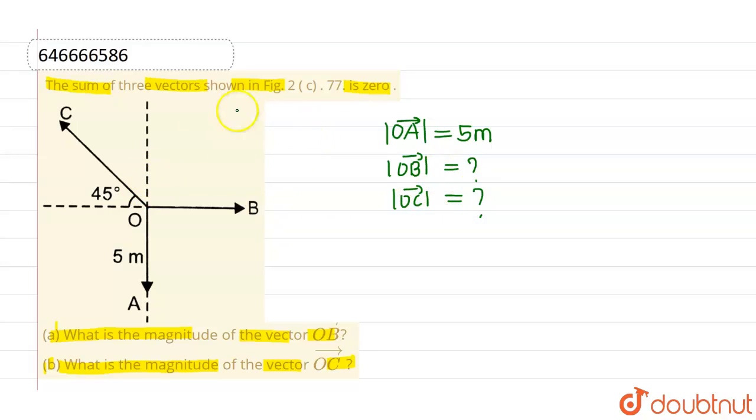Now since the vector sum is zero or I can say this particular system is in equilibrium, therefore net resultant is zero. So what I will be doing is I will simply resolve this particular OC vector into two components. Let's say this is the first component.